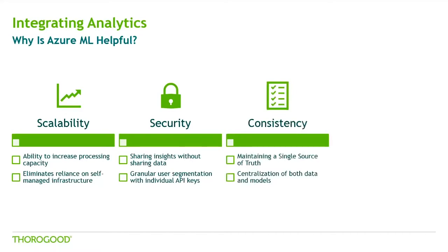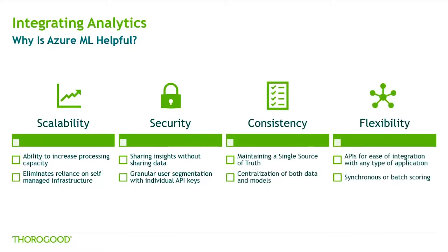Another major benefit is consistency. What happens when you have one set of forecasts and someone in another section of the business creates their own forecasts that tell completely different stories? Integrating a tool like Azure ML into your business processes means integrating a central repository for your analytical models, so the same valuable insights can be shared by others throughout the business. And lastly, there's flexibility. It's built with web service architecture in mind, which is already set up to integrate into your existing applications. Anything that can communicate with APIs will be able to make use of these web services, with flexibility in the type of web service available — scoring via synchronous calls or batch processing, whatever the end application needs.